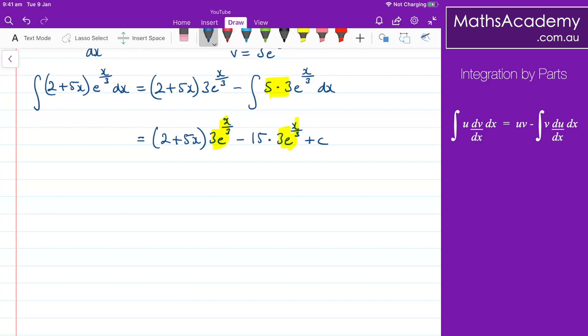So I've got 3e to the x over 3 multiplied by the (2 plus the 5x), and then I've got this negative 15 here, so minus 15, obviously plus that constant.